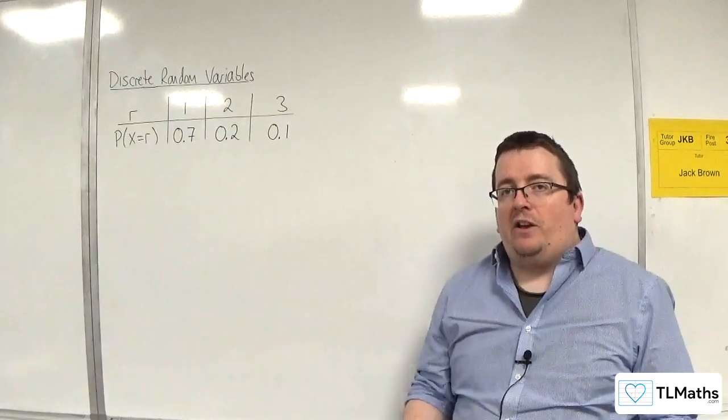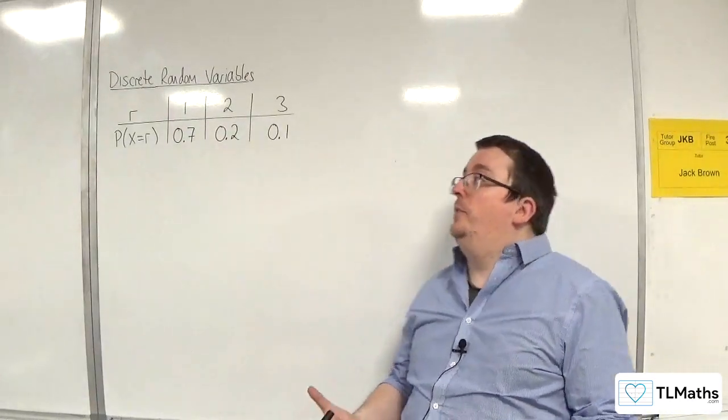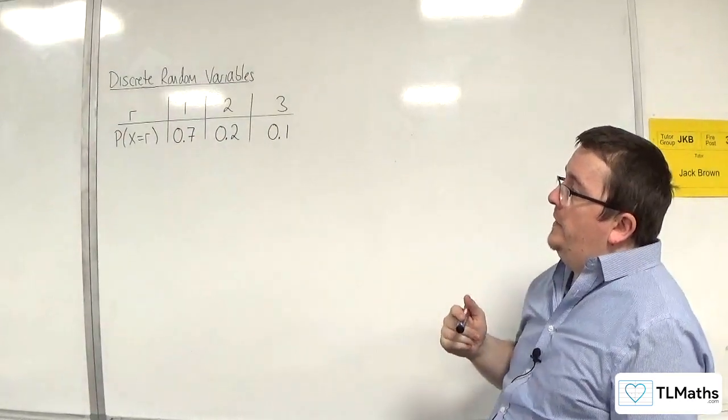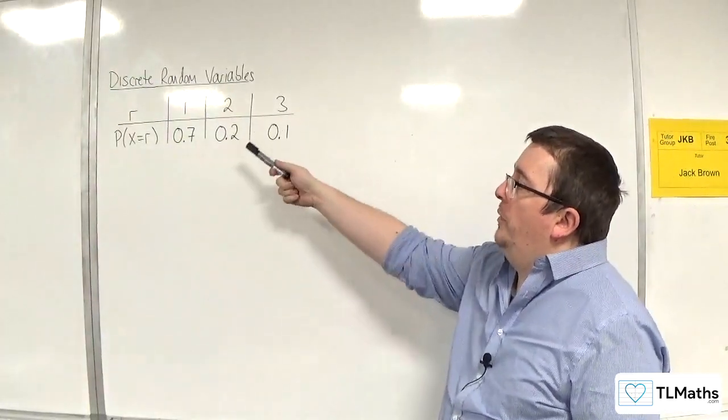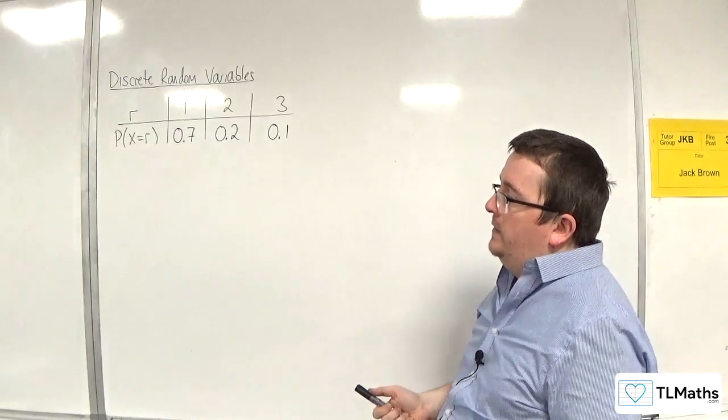In this video we're going to do a little bit of exploration with var of x. We're going to work with this distribution here. So r could be 1, 2 or 3, with probabilities 0.7, 0.2, 0.1 respectively.